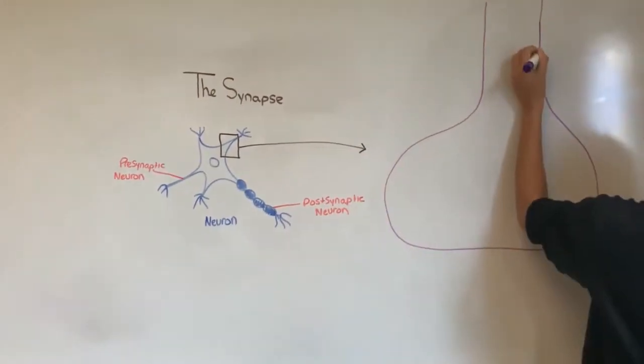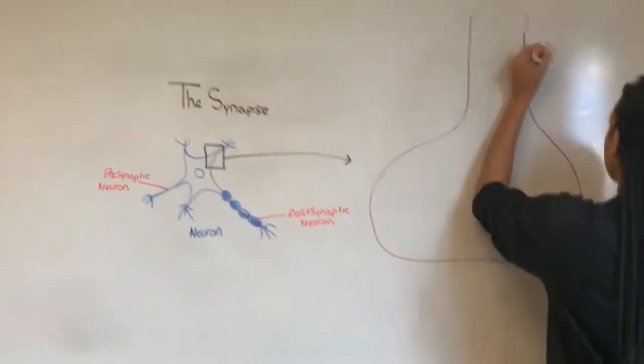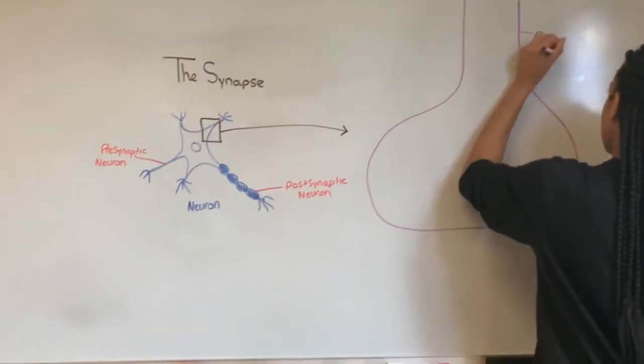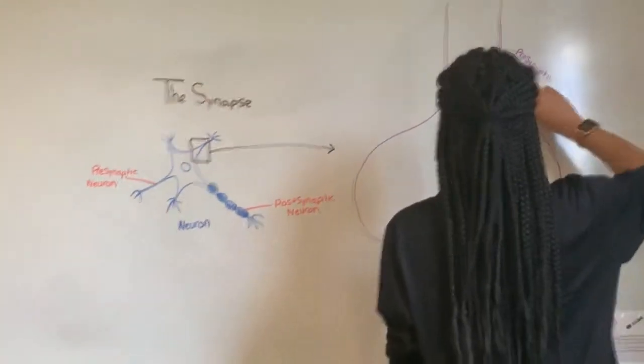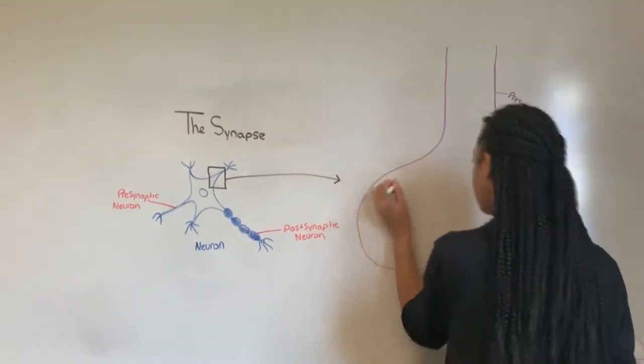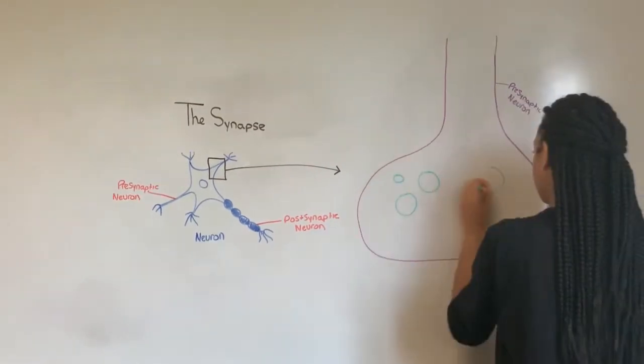Chemical synapses are specialized to allow the release and reception of chemical messengers known as neurotransmitters. Some examples include serotonin, which plays a role in our sleep and appetite, and our feel-good neurotransmitter, dopamine.